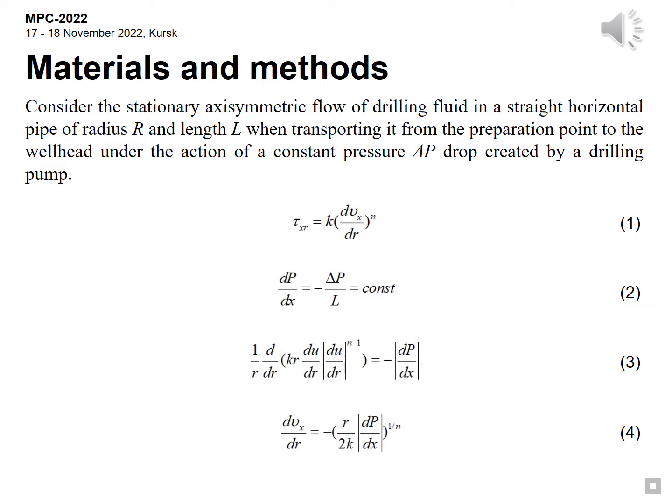Consider the stationary axisymmetric flow of drilling fluid in a straight horizontal pipe of radius r and length l when transporting it from the preparation point to the wellhead under the action of a constant pressure delta p drop created by a drilling pump.